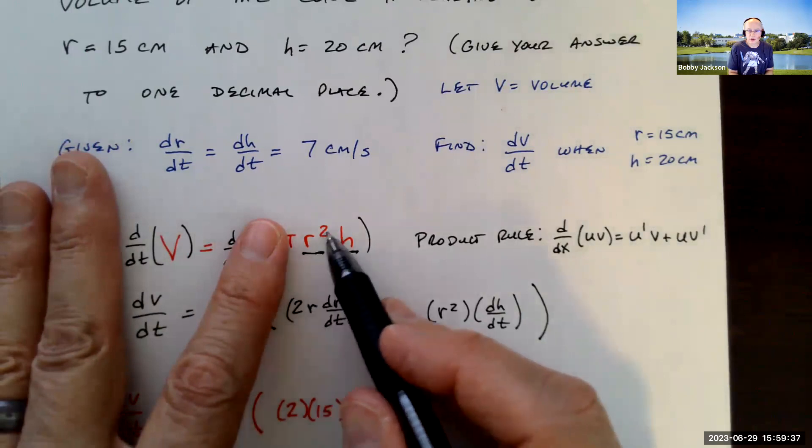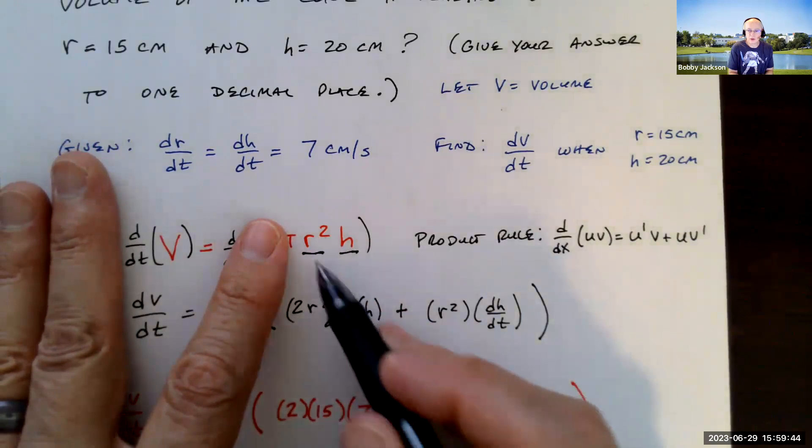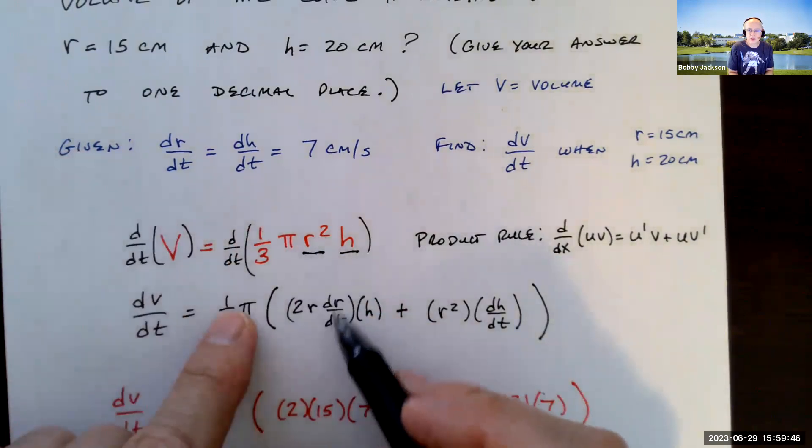The outer function is r squared. The inner function is r. Derivative is the derivative of the outer function, which is 2r, times the derivative of the inner function. What's the derivative of r with respect to t? That's dr/dt.